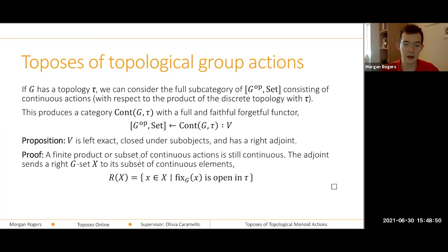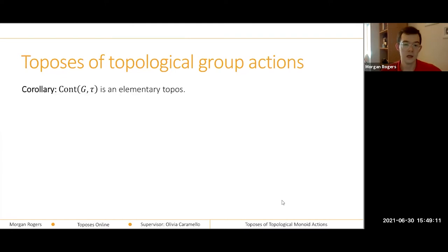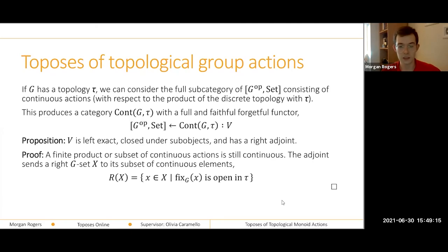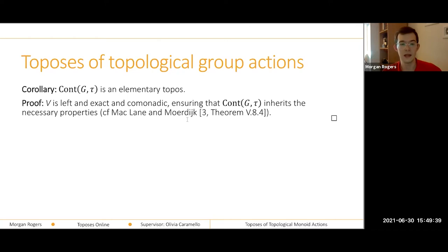The right adjoint sends a G-set X to the collection of elements whose stabilizer subgroup of G is open in the topology — so we can express it purely as a condition on open subgroups. From the existence of this functor with all these properties, we can deduce a variety of properties of this category. First and foremost, that it's a topos: V is left exact and has a right adjoint, which is more than enough to make it comonadic. It's a classical result that a category of coalgebras for a comonad on a topos is still a topos.